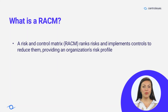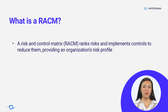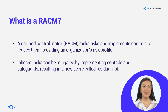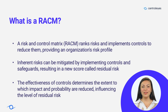A risk and control matrix, or RACM, is a valuable tool for ranking risks and implementing controls to mitigate them. It visually represents potential risks and the protective measures taken to reduce them, providing an overview of an organization's risk profile. Inherent risks exist inherently in assets, but controls and safeguards can be implemented to lower them, resulting in a new score known as residual risk. The effectiveness of these controls determines the extent to which the impact and probability of risks are reduced, thus influencing the level of residual risk.